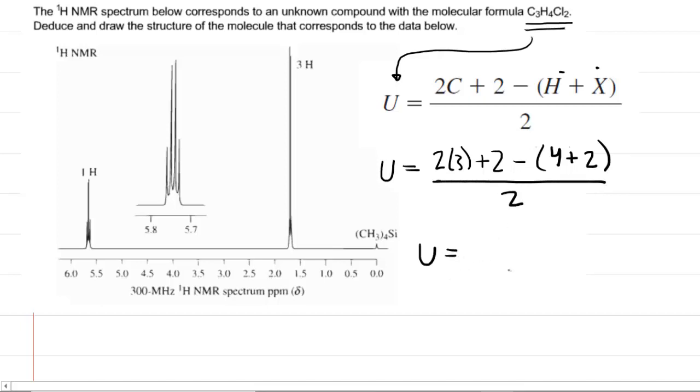Now if we simplify upstairs in the numerator, we're going to have 2. And therefore, once we divide, we can see the number of elements of unsaturation is just 1.